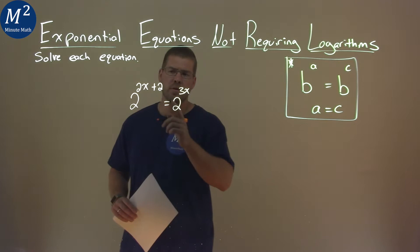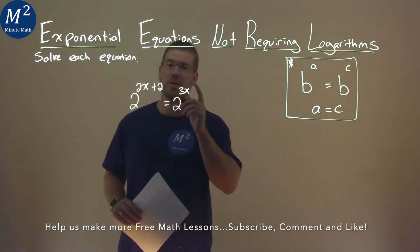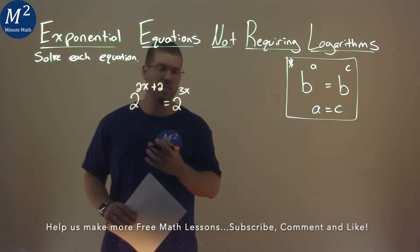We're given this problem right here, 2 to the 2x plus 2 power and that's equal to 2 to the 3x power and we have to solve this equation.